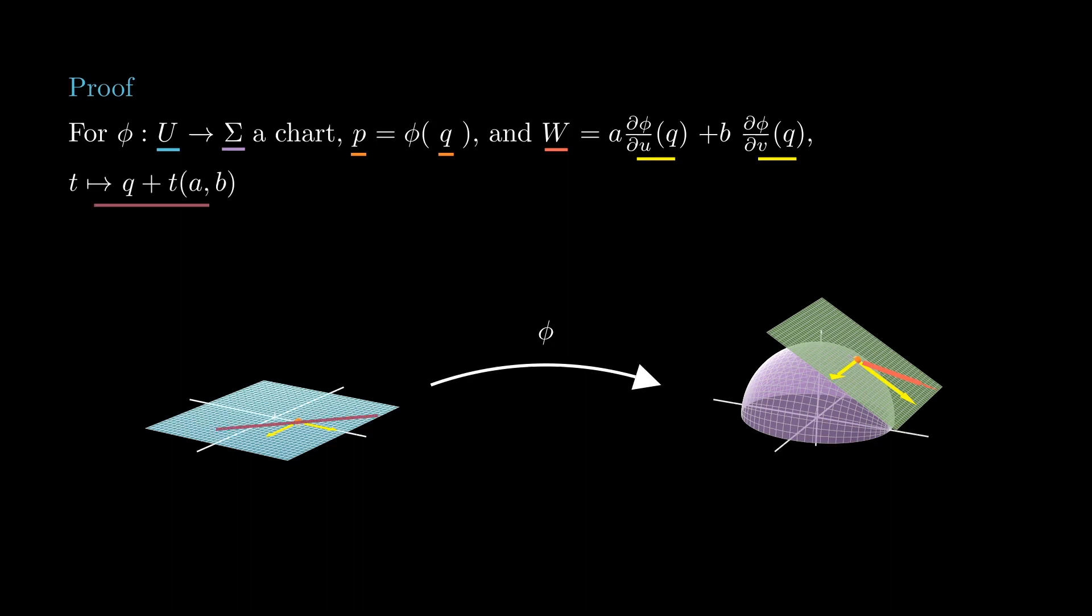We consider the line in the uv plane given by q plus t times (a, b), and define gamma of t to be phi of this line. By the chain rule, we see that gamma prime at zero is precisely the vector w.